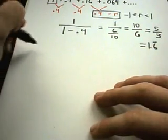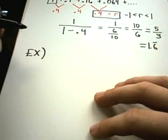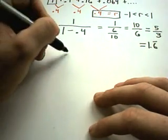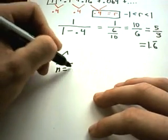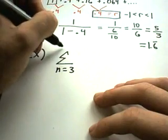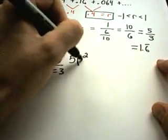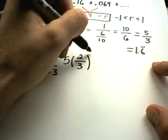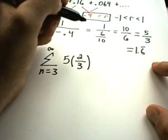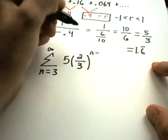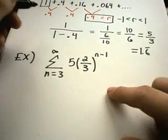Let's look at another one here. Suppose I have n equals 3 to infinity, and let's make it 5 times 2 thirds to the n minus 1.